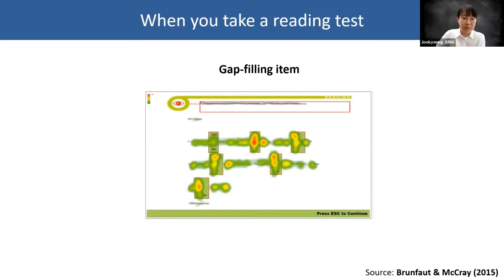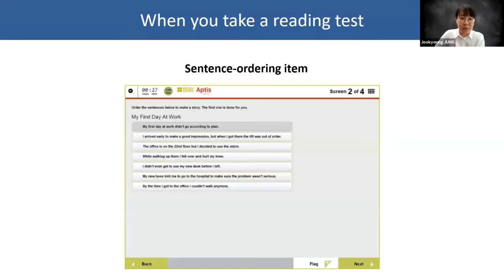Let's see another type of reading comprehension item. This is a sentence ordering item, and you have to order the sentences in a coherent and logical order. This item measures test takers' knowledge about sentence cohesion, sentence connection.